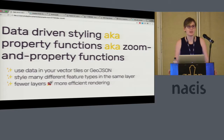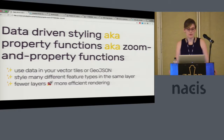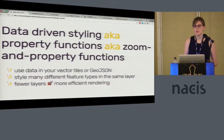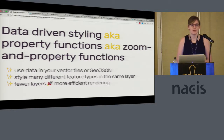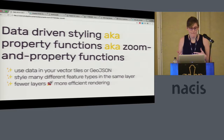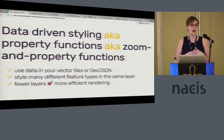In May, we started rolling out something we call data-driven styling, which allows users to use data in their vector tile data layers or GeoJSON properties to style their maps. Before this, if you wanted to do any sort of data visualization or have similar data but with different colors or sizes, you had to create an individual layer for every different appearance you were looking for. Data-driven styling is our solution to that problem, so now you can style many different attributes all in the same layer.